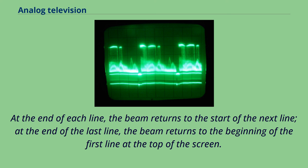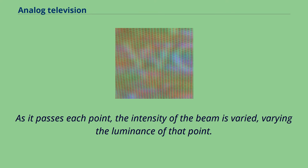As it passes each point, the intensity of the beam is varied, varying the luminance of that point. A color television system is similar except there are three beams that scan together and an additional signal known as chrominance controls the color of the spot.